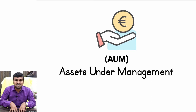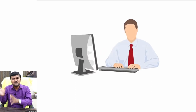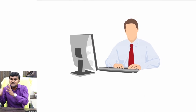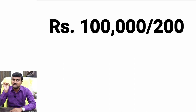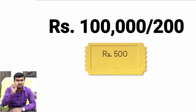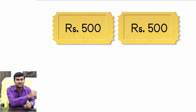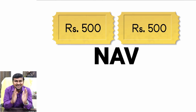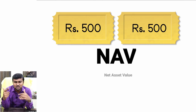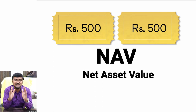The fund manager divided the 1 lakh rupees into 200 equal parts, so each part comes to 500 rupees. The person who invested 1000 rupees receives two units of 500 each. This 500 rupees is called NAV — Net Asset Value. In every mutual fund you will find this term NAV, which is simply the unit value or net asset value.